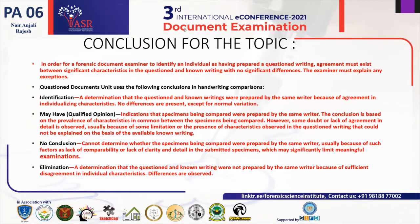In conclusion, for a forensic document examiner to identify an individual as having prepared a questioned writing, agreement must exist between significant characteristics in the questioned and known writing, with no significant differences. The examiner must explain any exceptions. Conclusion types used by the questioned document unit include: Identification — a determination that the questioned and known writings were prepared by the same writer because of agreement in individualizing characteristics, with no differences except normal variation. May Have Qualified Opinion — an indication that specimens were likely prepared by the same writer, based on prevalence of common characteristics; however, some doubt or lack of agreement in detail is observed, usually due to limitations in the available known writing.